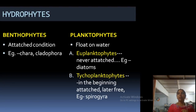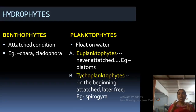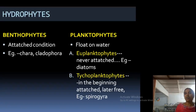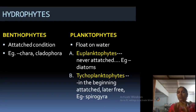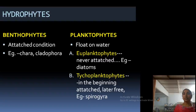Two very good examples of bentophytes are in your syllabus: Chara and Cladophora. Cladophora is usually observed attached on shells. Then planktophytes means they float on water — freely floating in the water. There are different categories: euplanktophytes means they are never attached and are always free-swimming in water. Trichoplanktophytes means in the beginning stages they are attached, but later they become free.